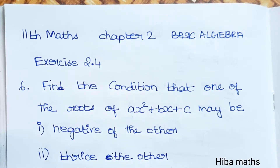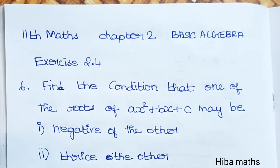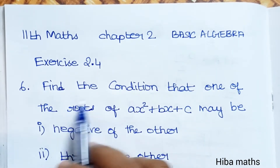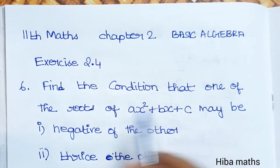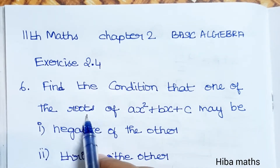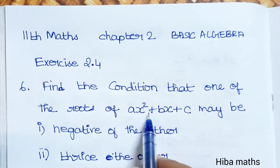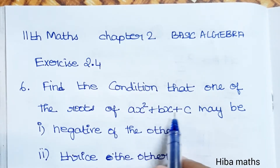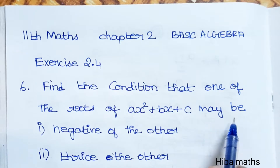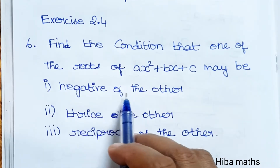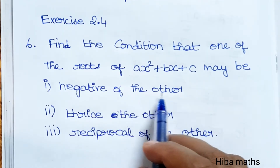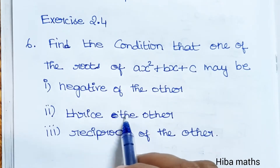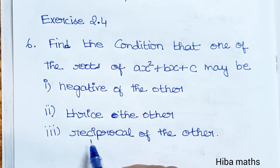Hello students, welcome to Hibamax 11th Standard Max, Chapter 2 Basic Algebra, Exercise 2.4, 6th question. Find the condition that one of the roots of AX² + BX + C may be: negative of the other, thrice the other, or reciprocal of the other.